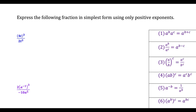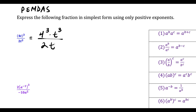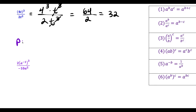For the first question, we could look at all the rules, but notice what we have is rule number four — a product being raised to a power. I like to think about order of operations, looking for parentheses and exponents first. So we get four to the third times t to the third over two t to the third. Right away, t to the third is going to cancel. Then we have four times four times four, which is 64, and 64 divided by two is 32.